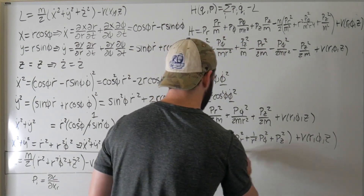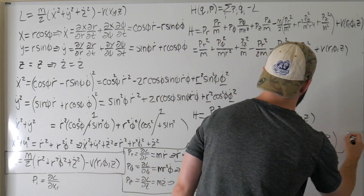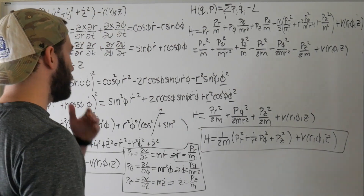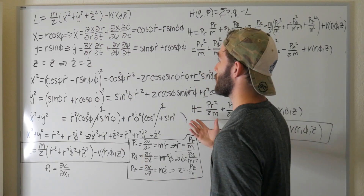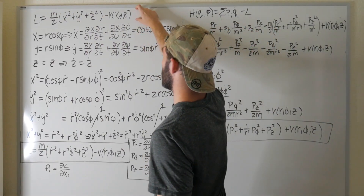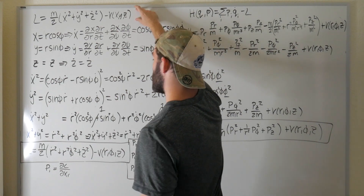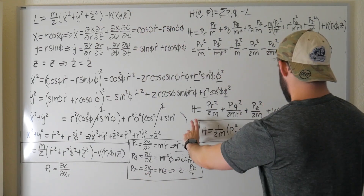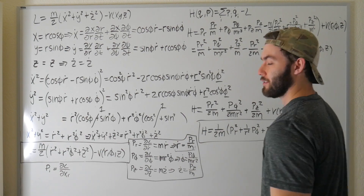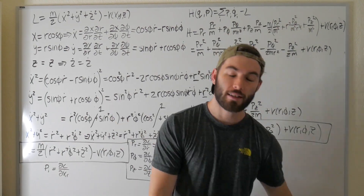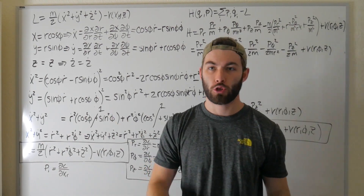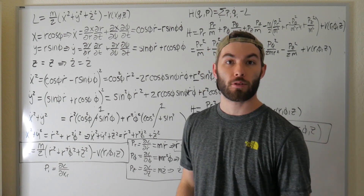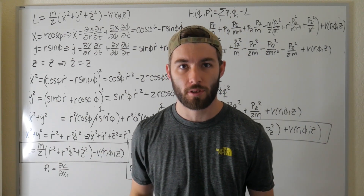We did it! There are really only three steps: step one, write down your Cartesian Lagrangian; step two, convert to cylindrical coordinates and compute the generalized momenta; step three, write down your cylindrical Hamiltonian. Should I do this in spherical coordinates in a future video? Let me know in the comments below!